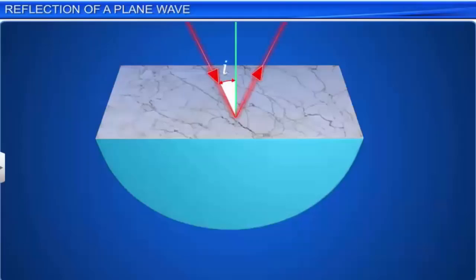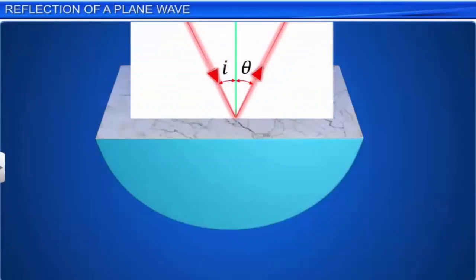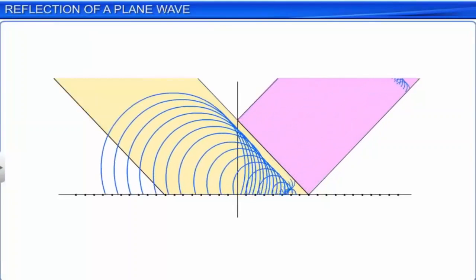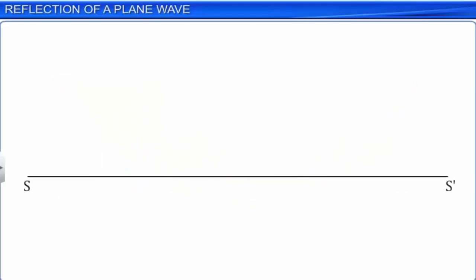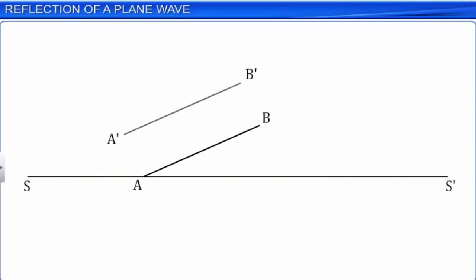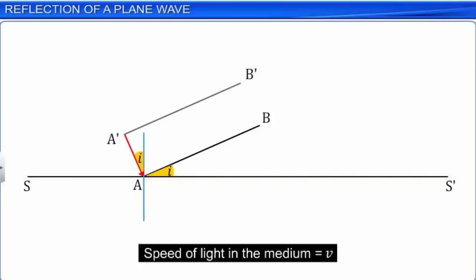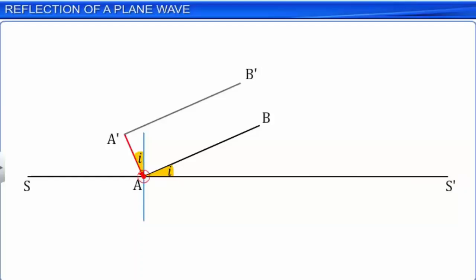In ray optics, you have already studied about the laws of reflection. Now we shall study them again, but with wave theory as the basis. In order to prove the laws of reflection based on wave theory, let us consider the reflection of a plane wave front A'B' from a plane reflecting surface SS'. Let AB be the position of the wave front when it just touches the reflecting surface at the instance t equal to zero. A'A gives the direction of propagation of the wave front, and let us assume that the wave front is incident on the surface SS' at an angle I, and the speed of the light in the given medium is V. At t equal to zero, the point A is in contact with the surface SS'.